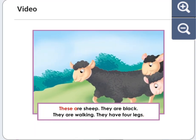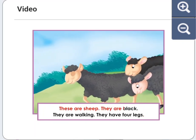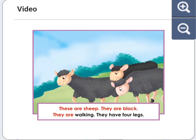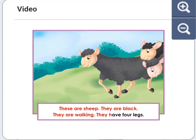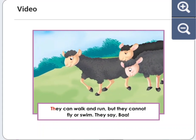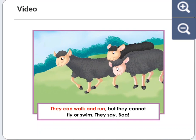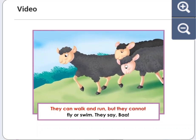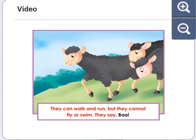These are sheep. They are black. They are walking. They have four legs. They can walk and run, but they cannot fly or swim.